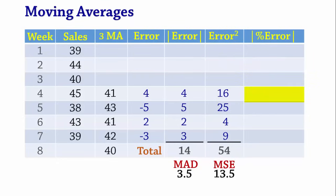For week 4, the absolute percent error is calculated as 4 divided by 45 times 100% and that gives 8.89%. And for week 5, 5 divided by 38 times 100% which gives 13.16%. For week 6, 2 divided by 43 which gives 4.65%.